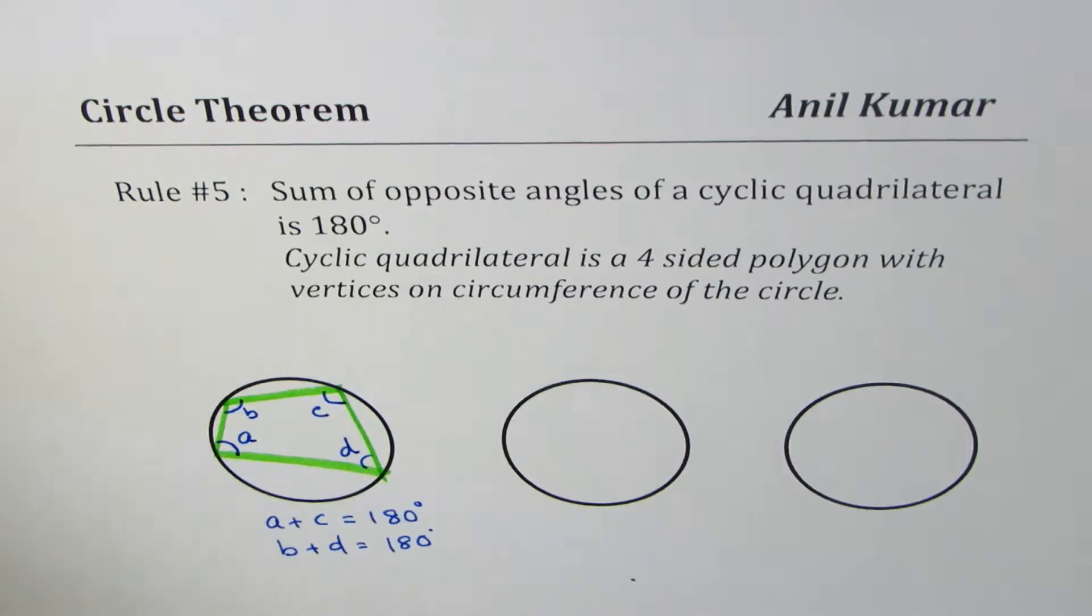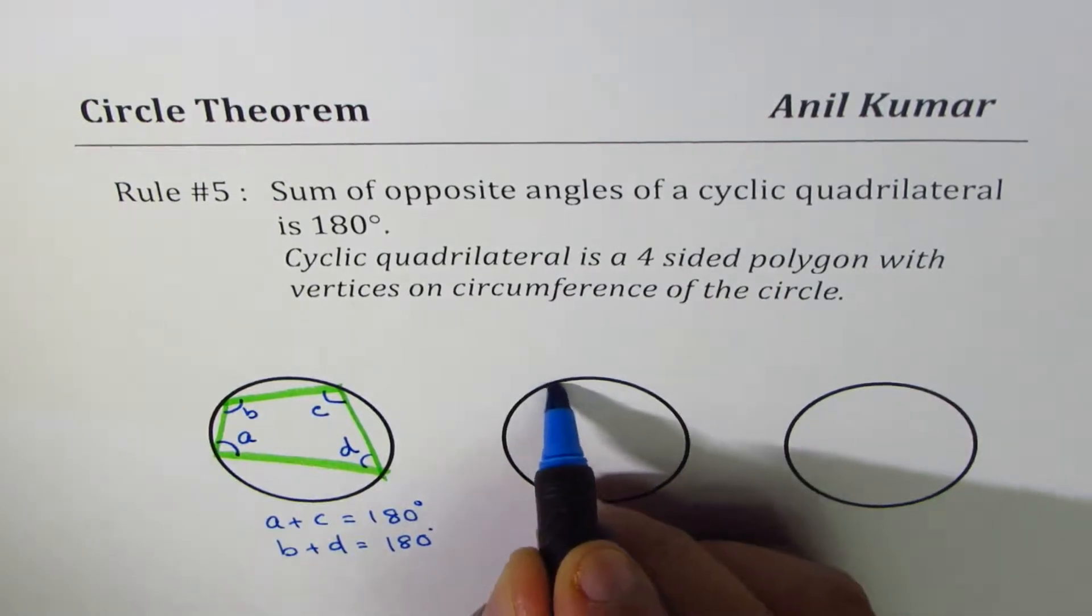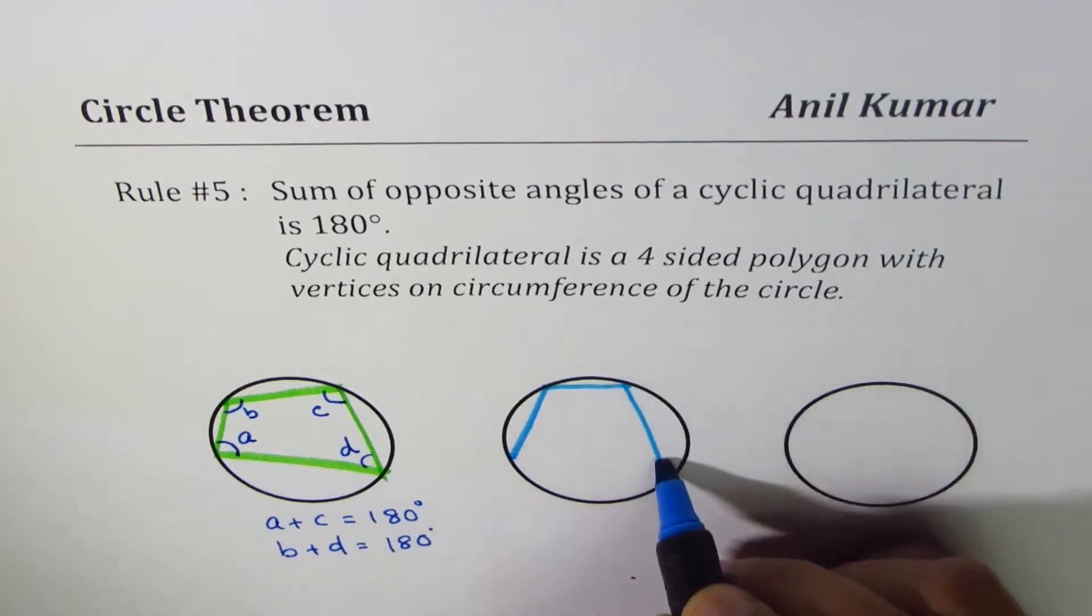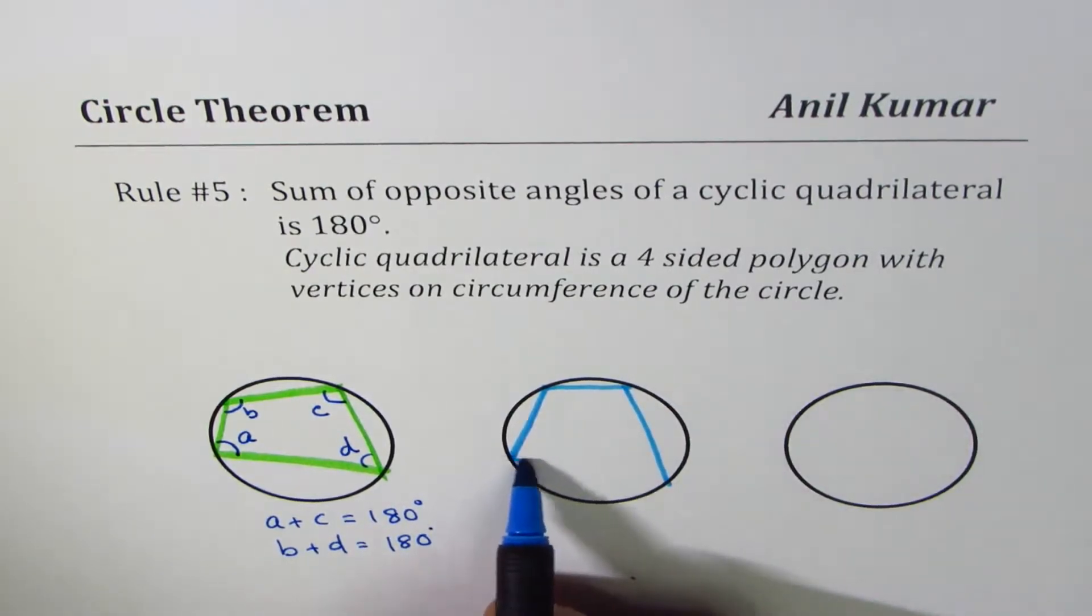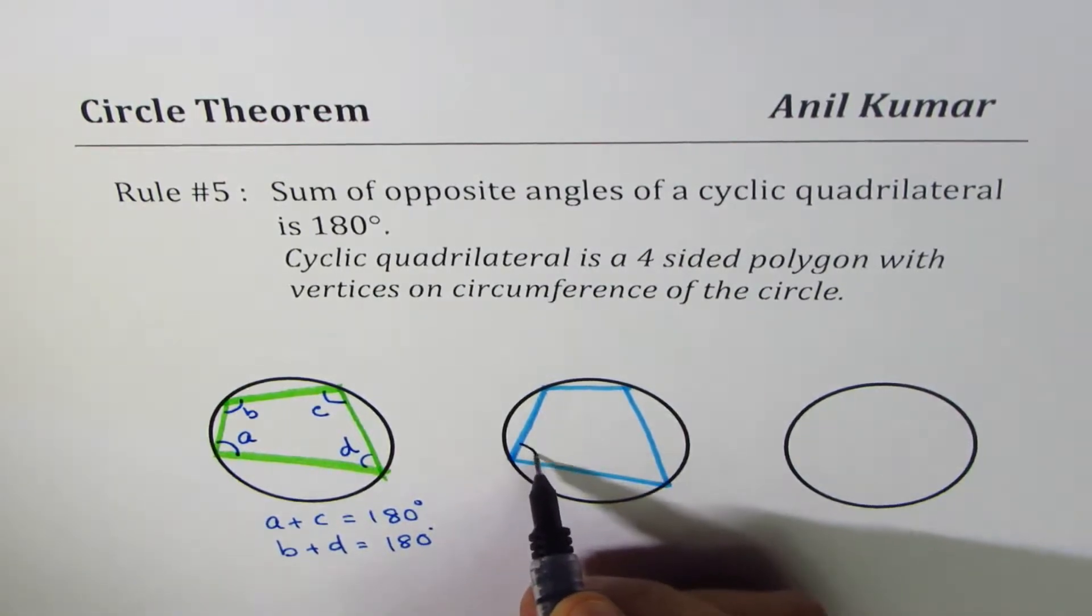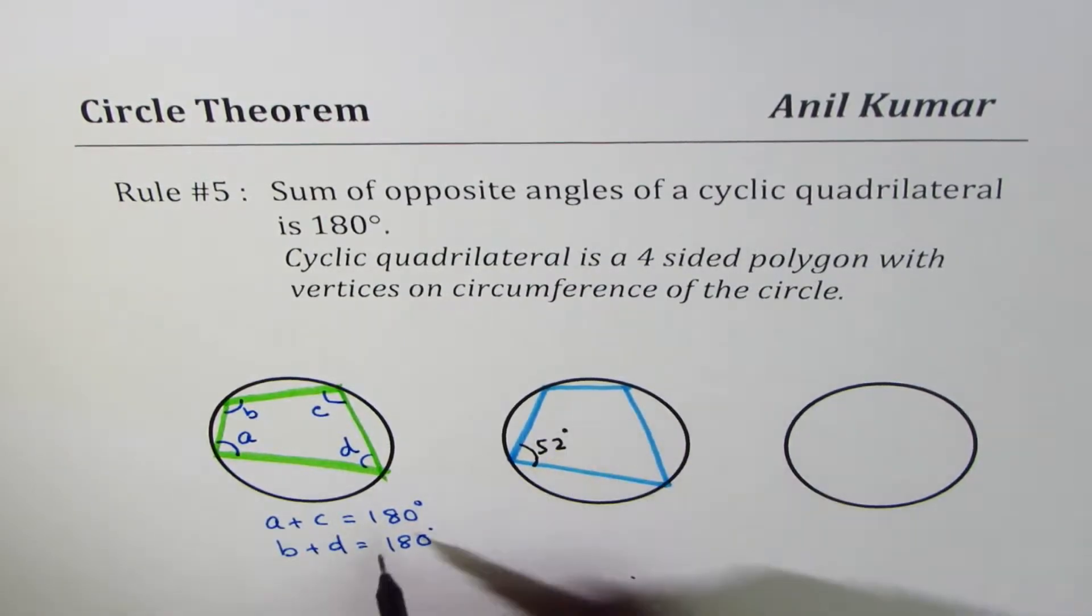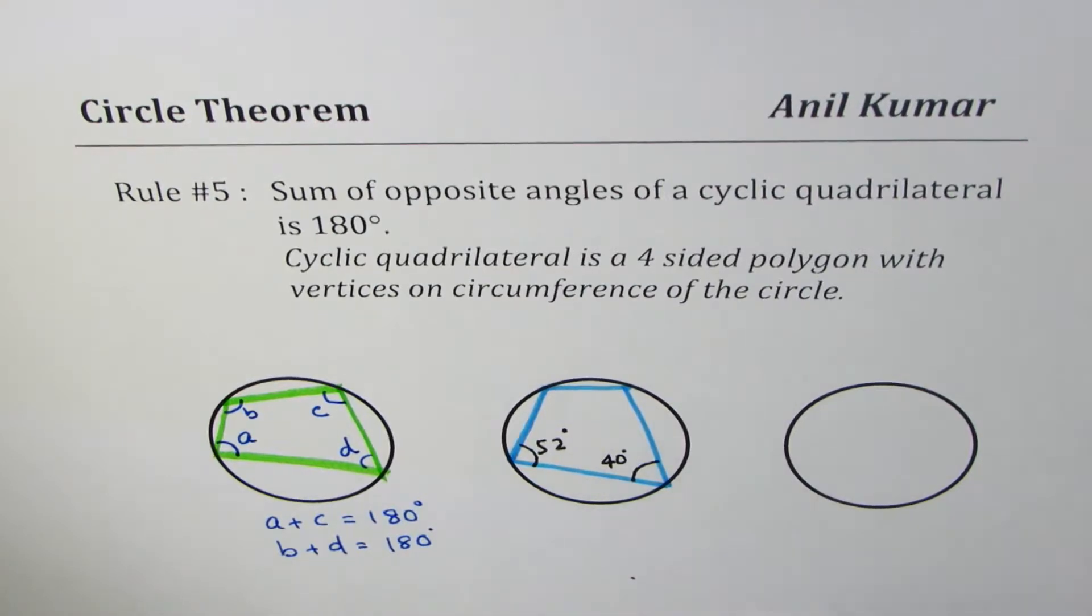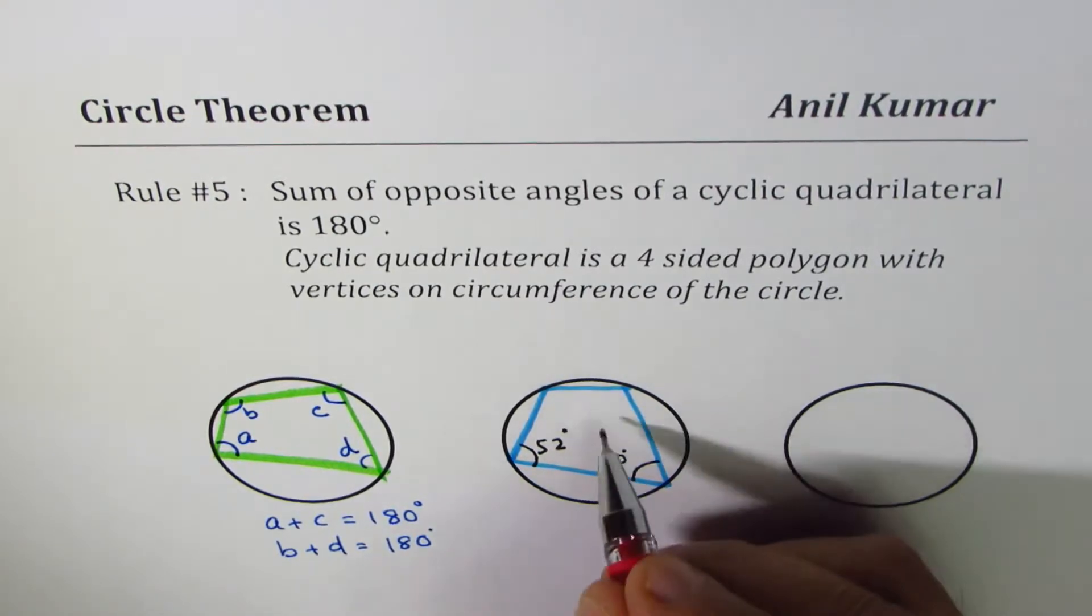Based on this we could have some questions. So let's have an example. All these diagrams which we make here are not to scale, so we have to use the rules to get the results. Let us say this angle is 52 degrees and this angle is 40 degrees. In that case, you have to find the angle x and y.